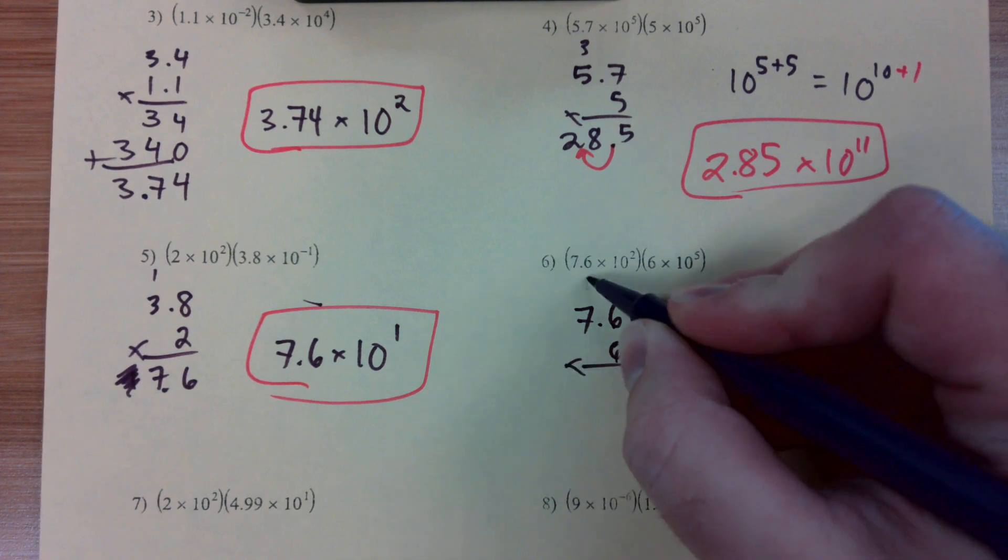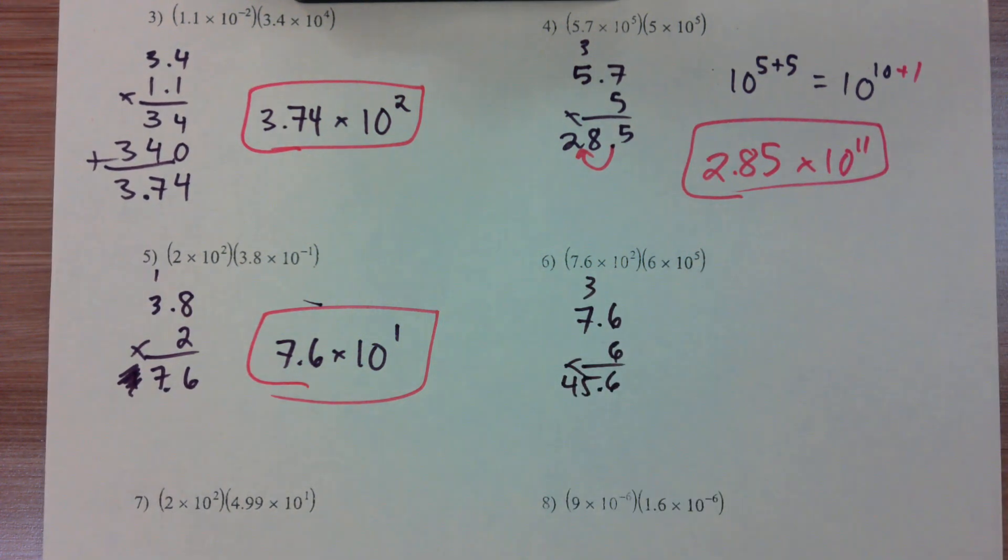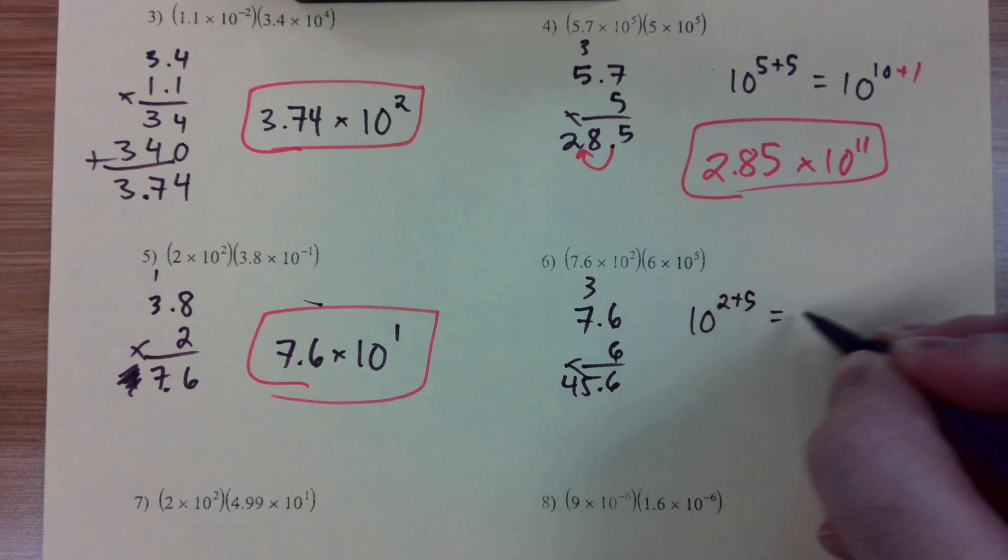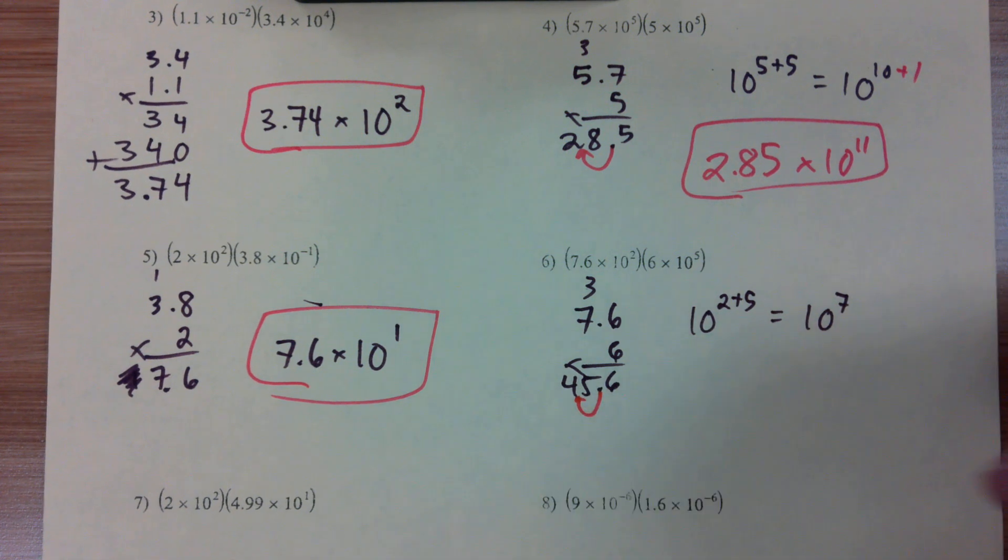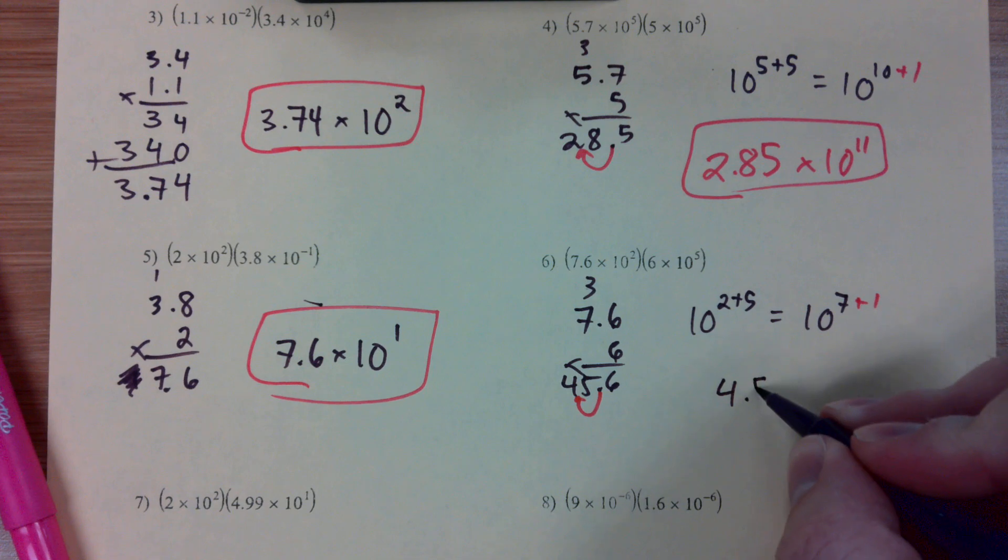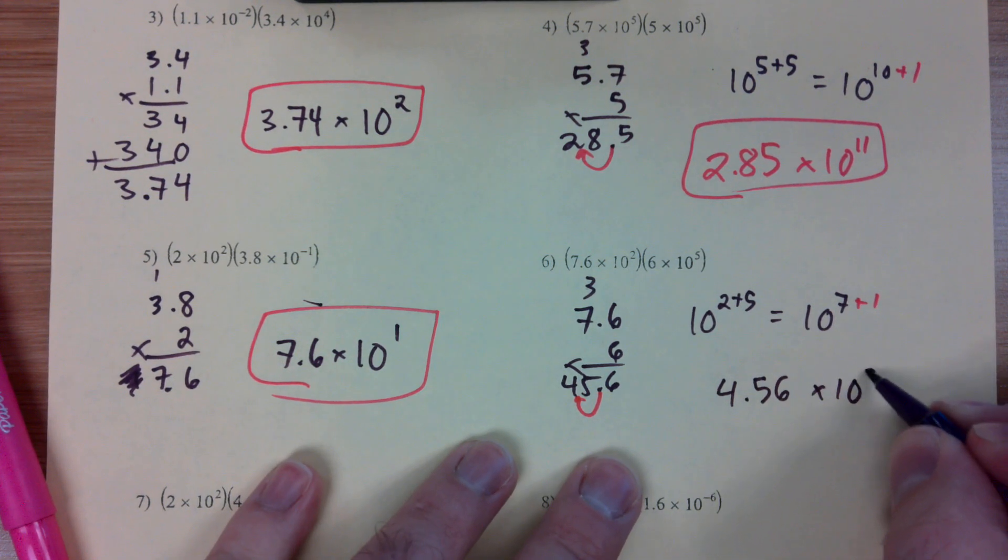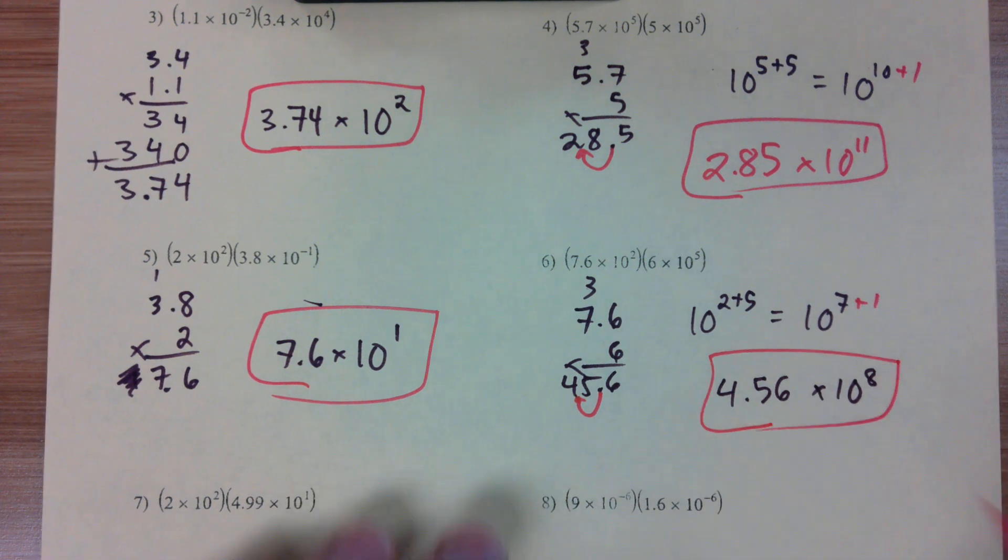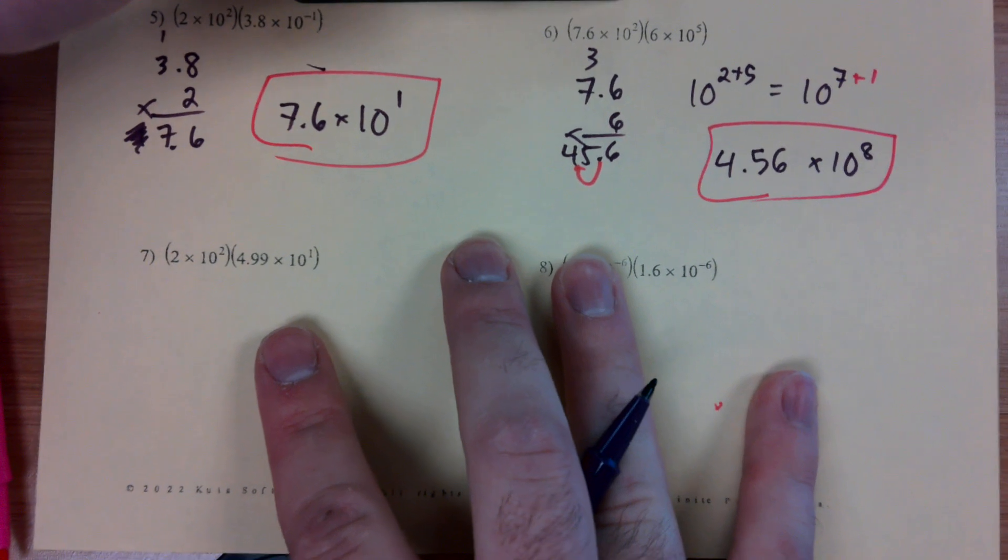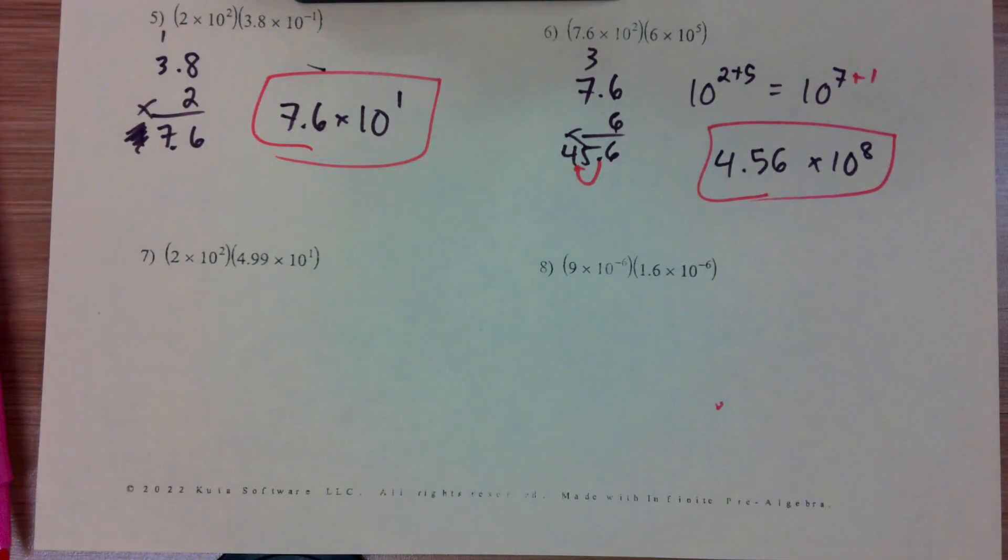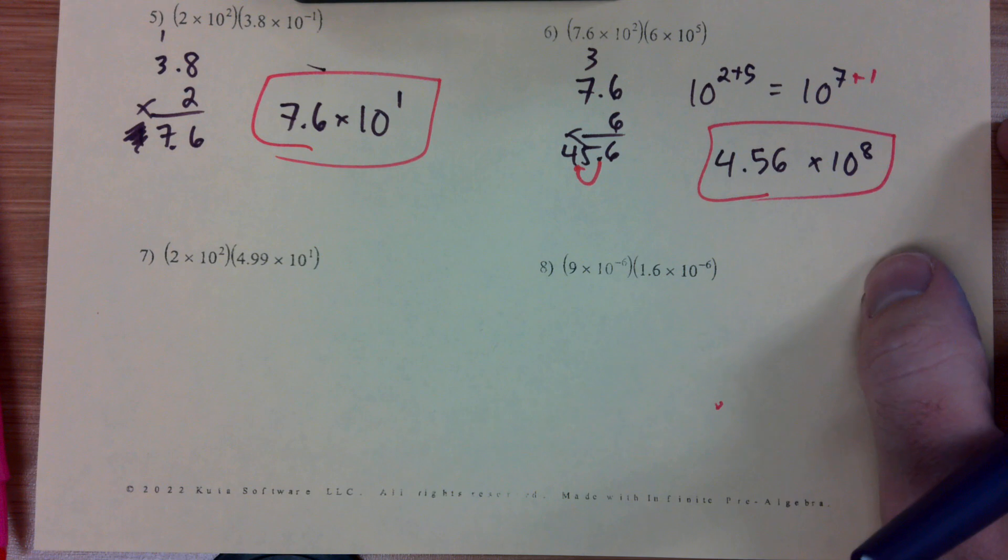7.6 times 6, we got 36 and 45. 10 to the 2 plus 5 gives us 10 to the 7th. Move our decimal one space, adds one to our power. 4.56 times 10 to the 8th. Questions so far? Beautiful.